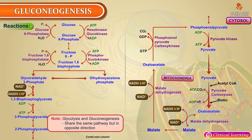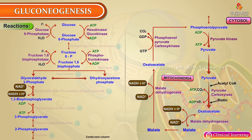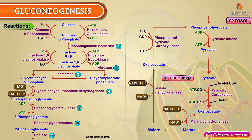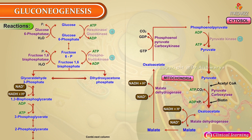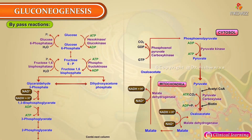Reactions of gluconeogenesis: glycolysis and gluconeogenesis share the same pathway but in opposite directions. Seven reactions of glycolysis are reversible and therefore use the same enzymes in the synthesis of glucose. Three reactions of glycolysis are irreversible and must be bypassed by four special reactions unique to gluconeogenesis — the bypass reactions.